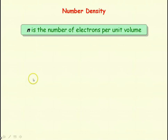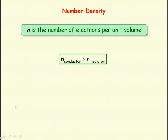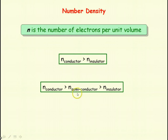The number density N in the equation is the number of electrons per unit volume. The number density for conductors is greater than for insulators — conductors have more free electrons per unit volume. Semiconductors are not full conductors but better than insulators, so their number density is less than that of a conductor but more than that of an insulator — semiconductors have fewer electrons per unit volume than conductors but more than insulators.